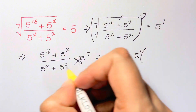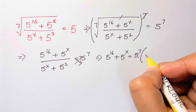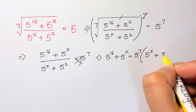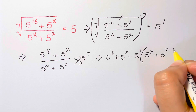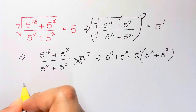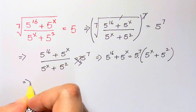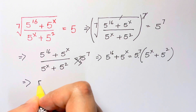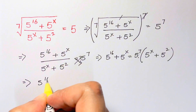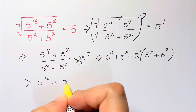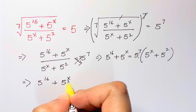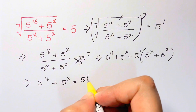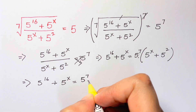Now the next step, we're going to open the parentheses: 5 to the 16 plus 5 to the x is equal to 5 to the 7th times 5 to the x, plus 5 to the 7th times 5 squared.